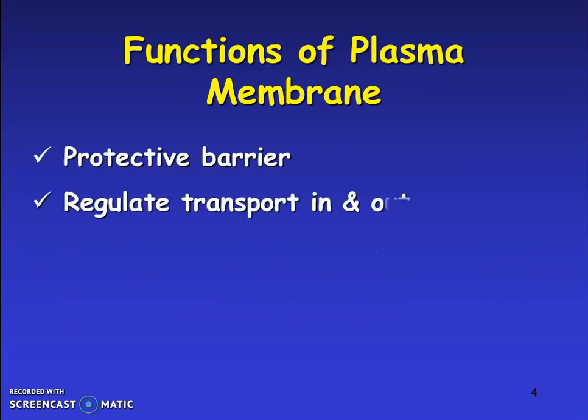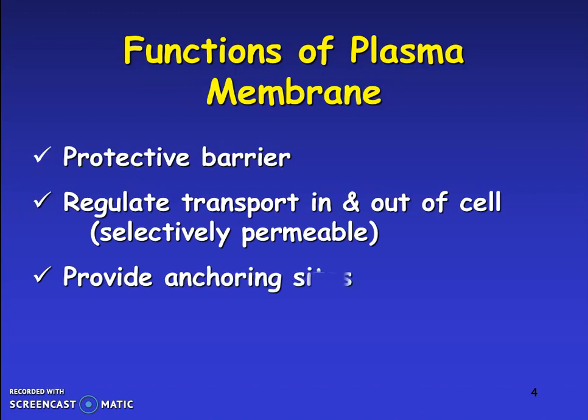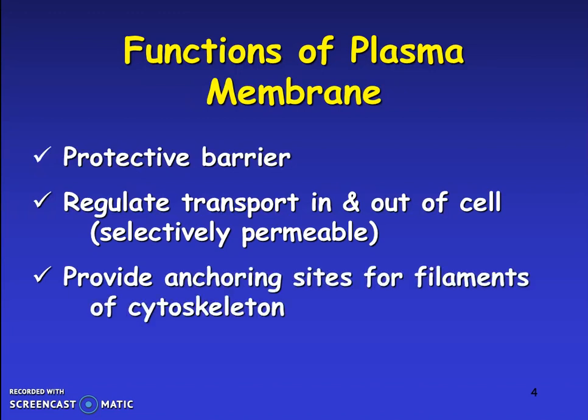Some of the functions of the cell membrane or plasma membrane are: it is a protective barrier; it inhibits the entry and exit of material; it regulates transport in and out of the cell; and it is selective, allowing only specific molecules to pass. It also provides an anchoring site for filaments of the cytoskeleton, which gives structure to the cell — like bones.